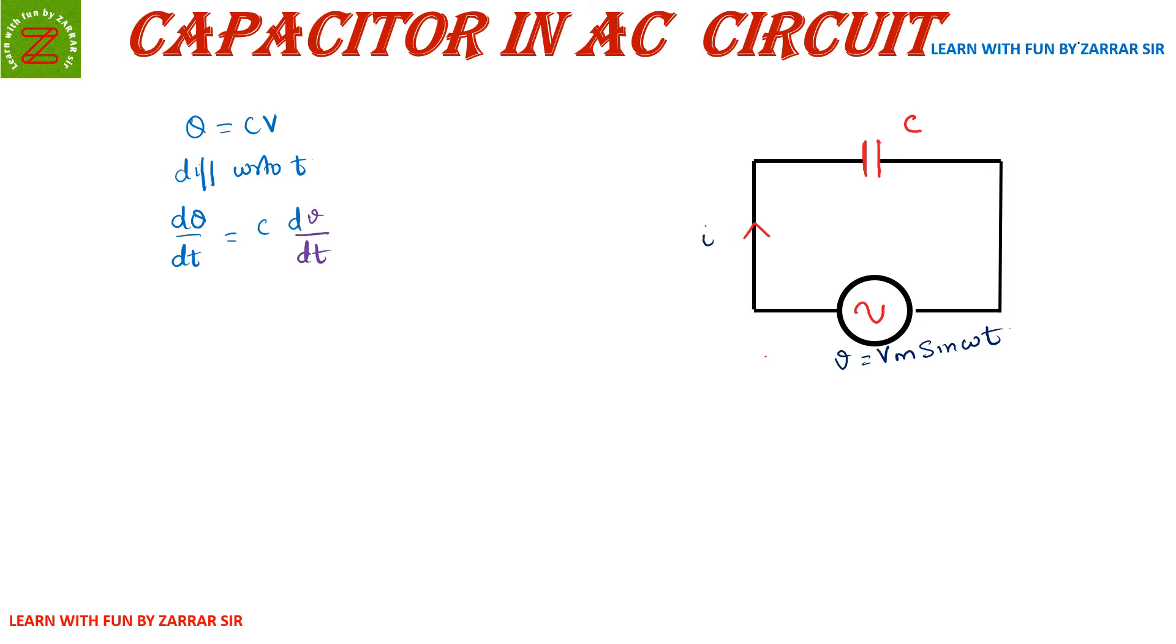Now what will happen is if I differentiate this, dQ/dt is rate of flow of charge which is current. So dQ/dt will be i = C × dV/dt.